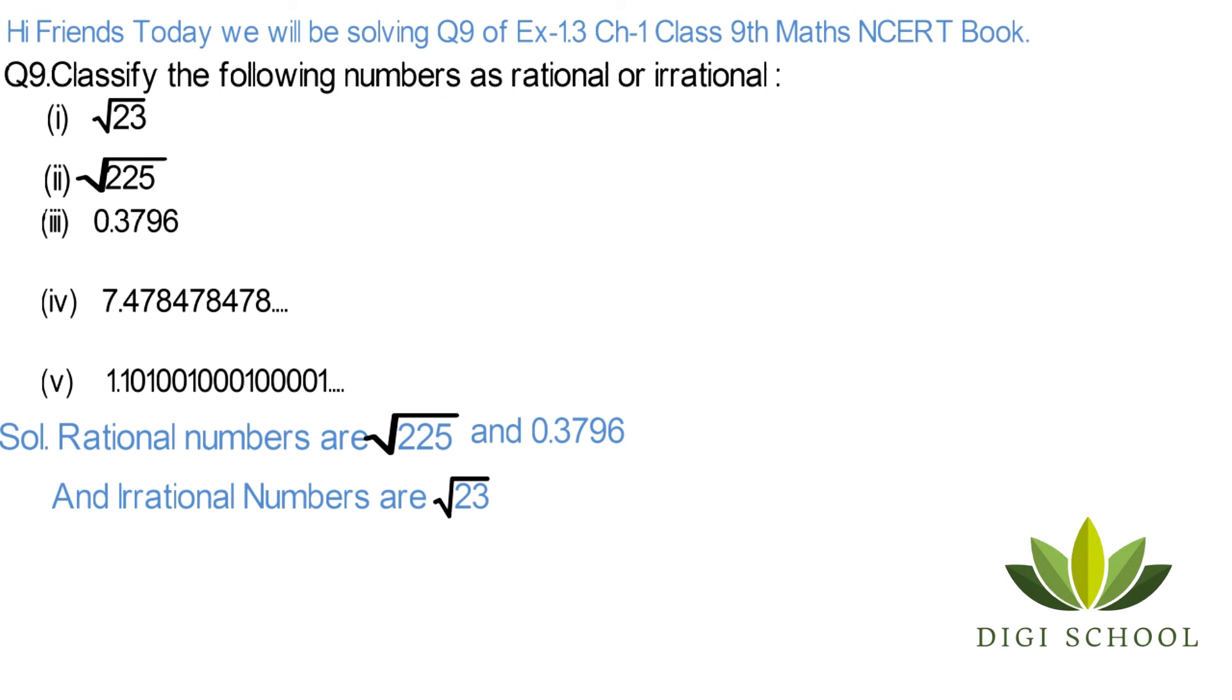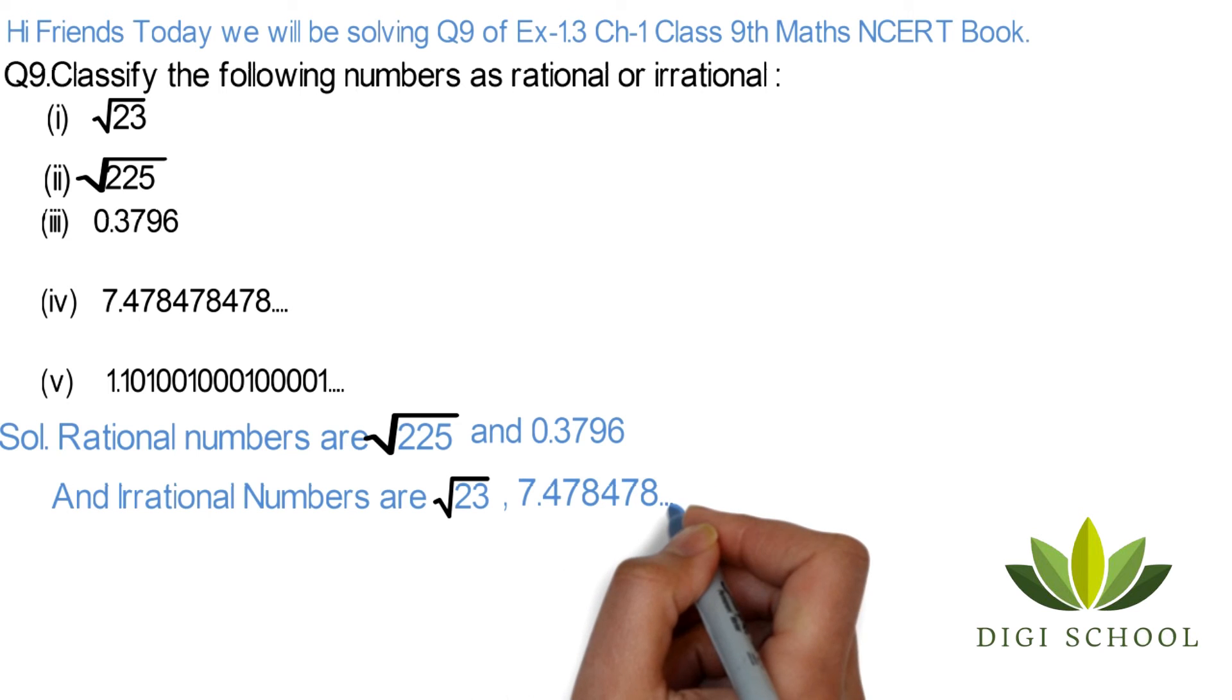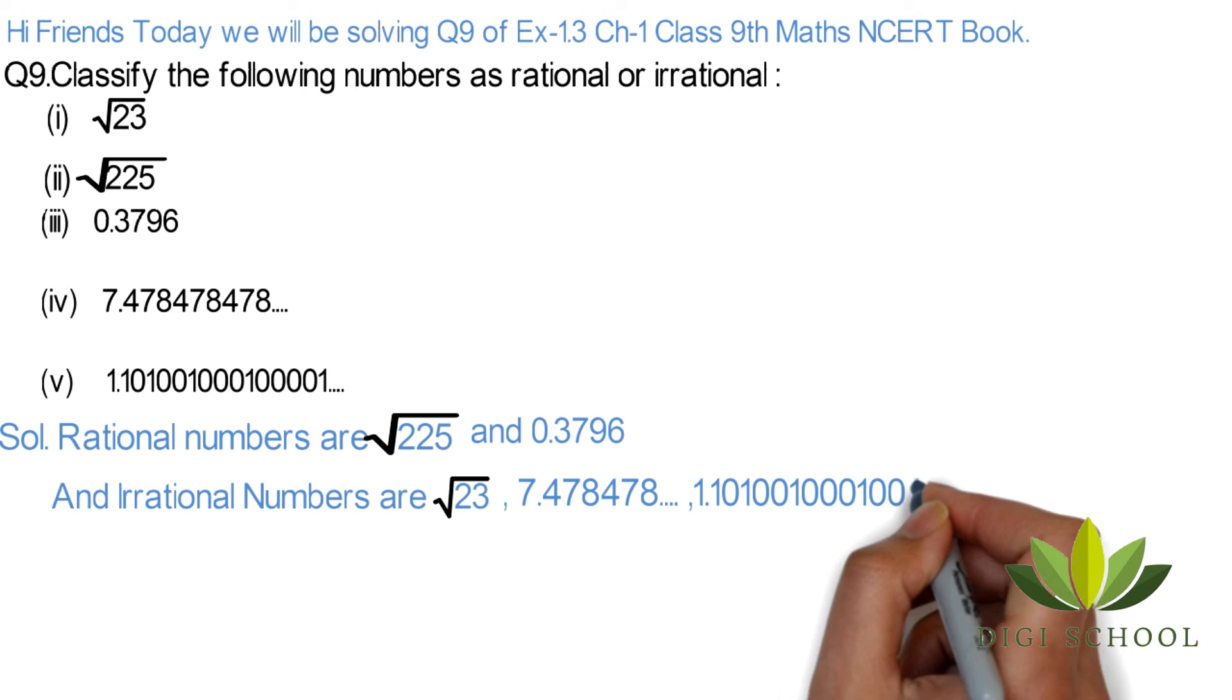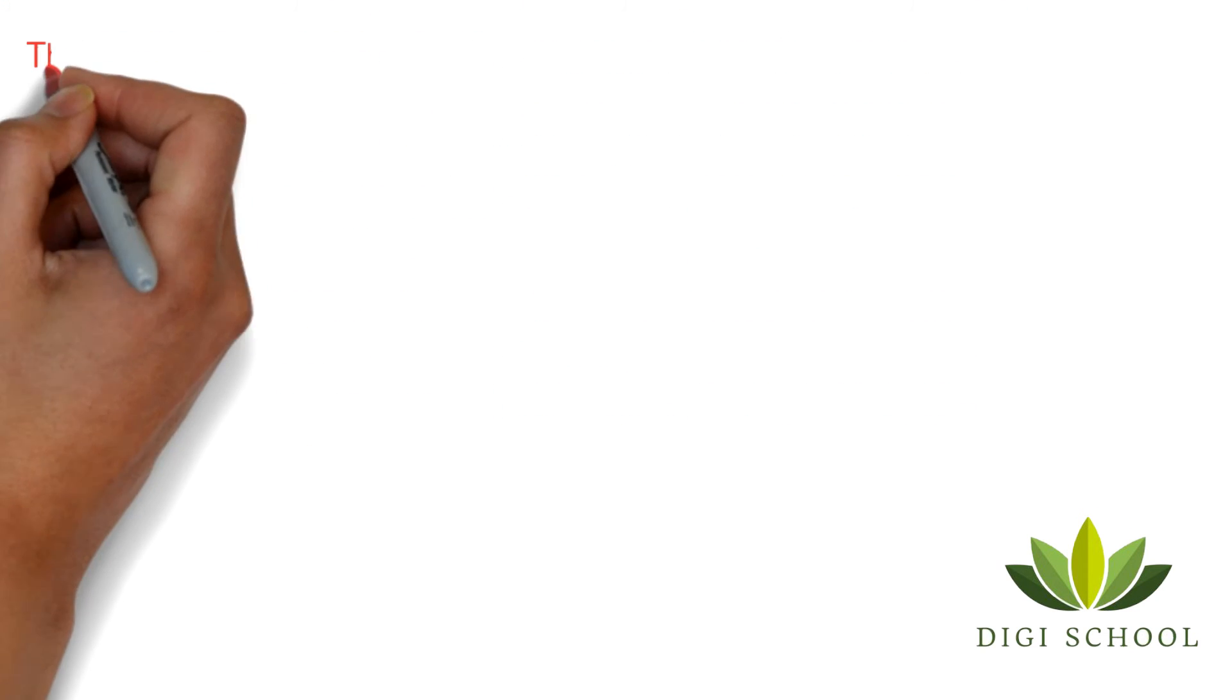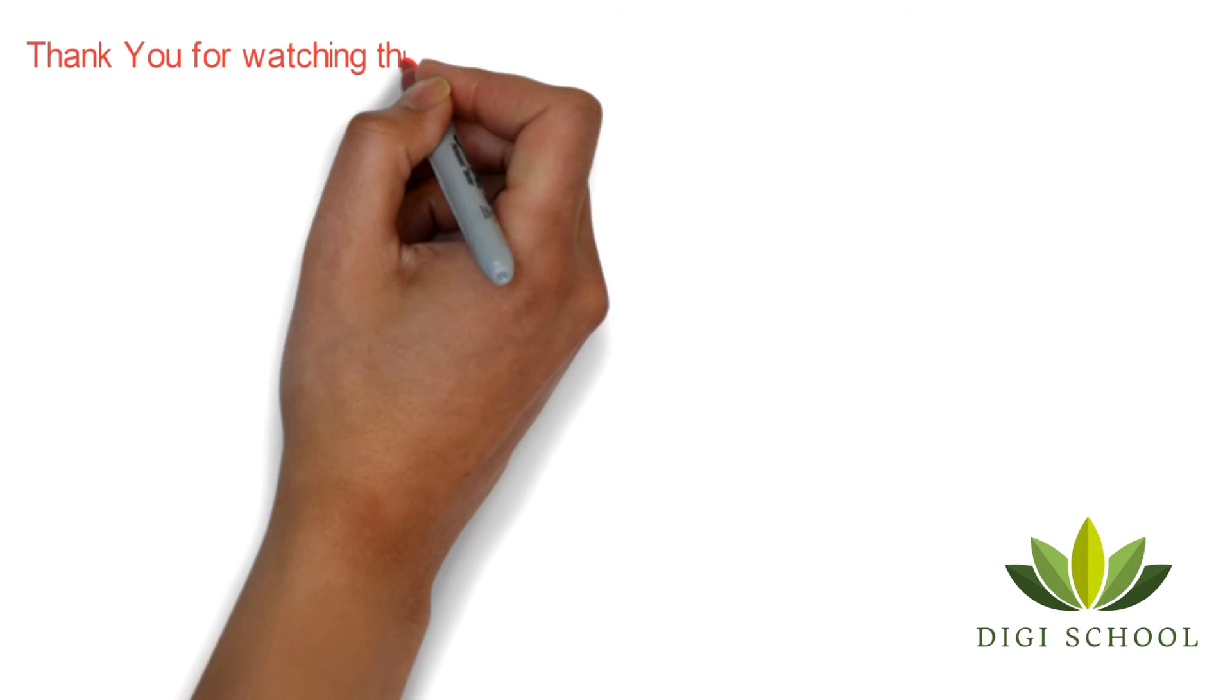If we find Root of 23, Root 23 would be irrational. And 7.478 bar is also a rational number, and 1.101001 is also a rational number. Thank you.